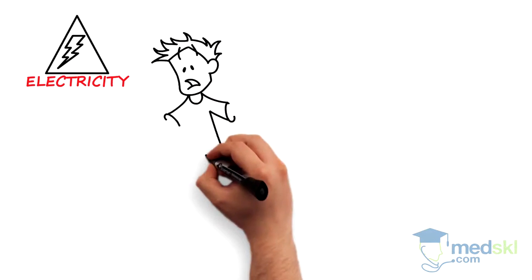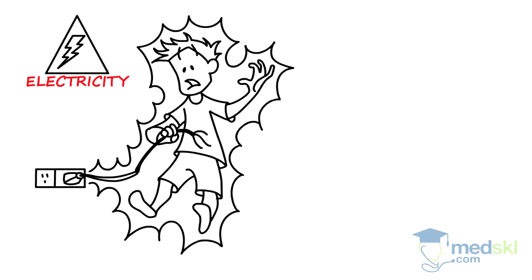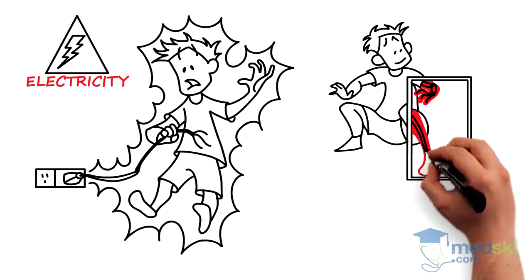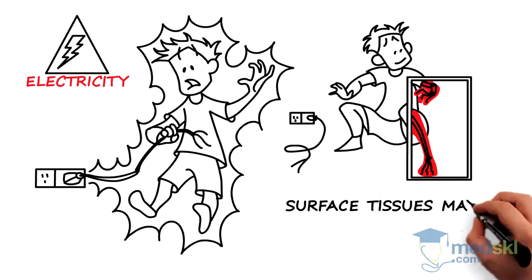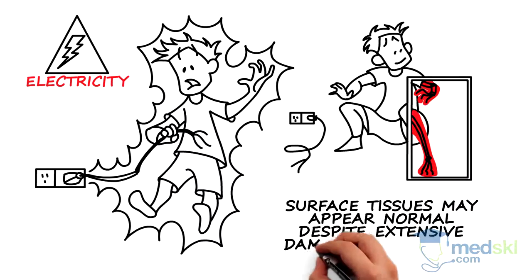Electricity can cause extensive injury to any tissue through which it travels. Electrical burns can be difficult to identify initially because the surface tissues may appear normal despite extensive damage hiding below.